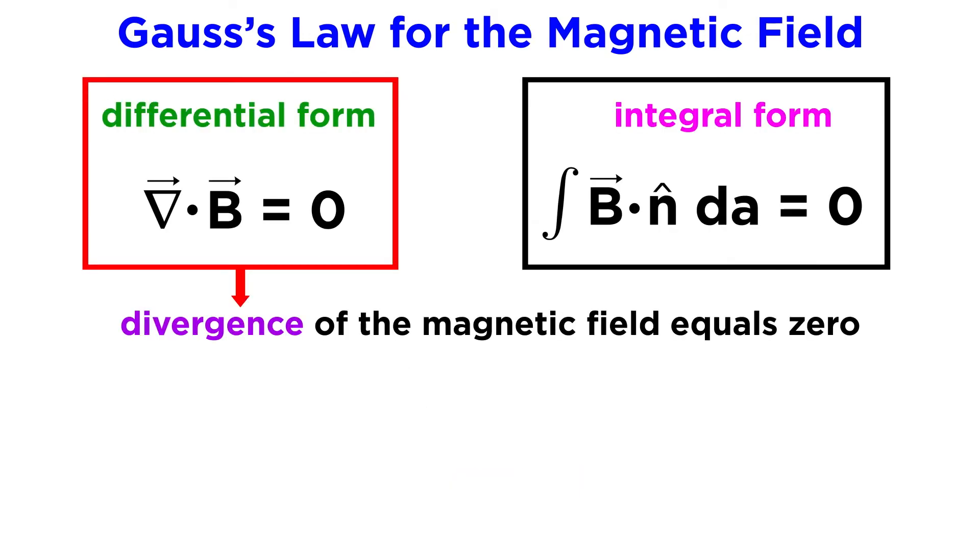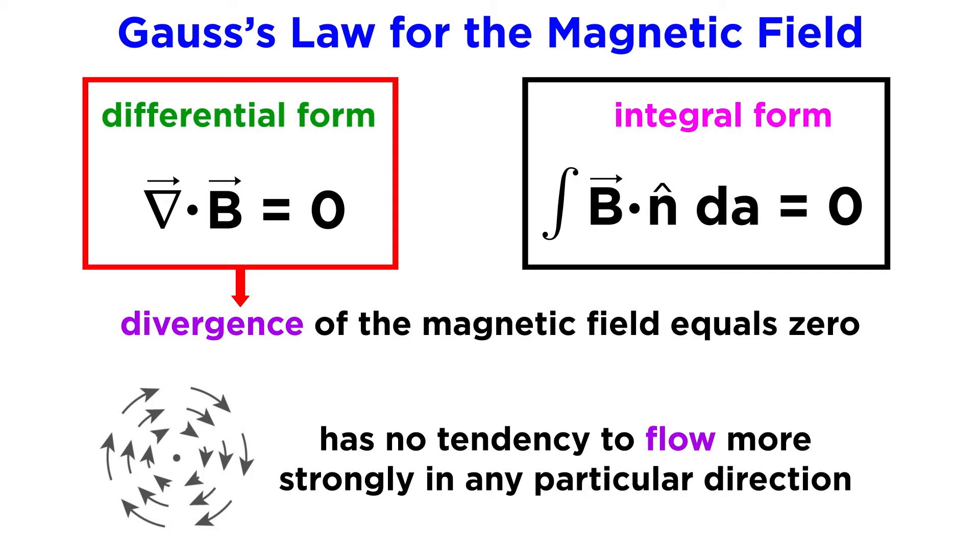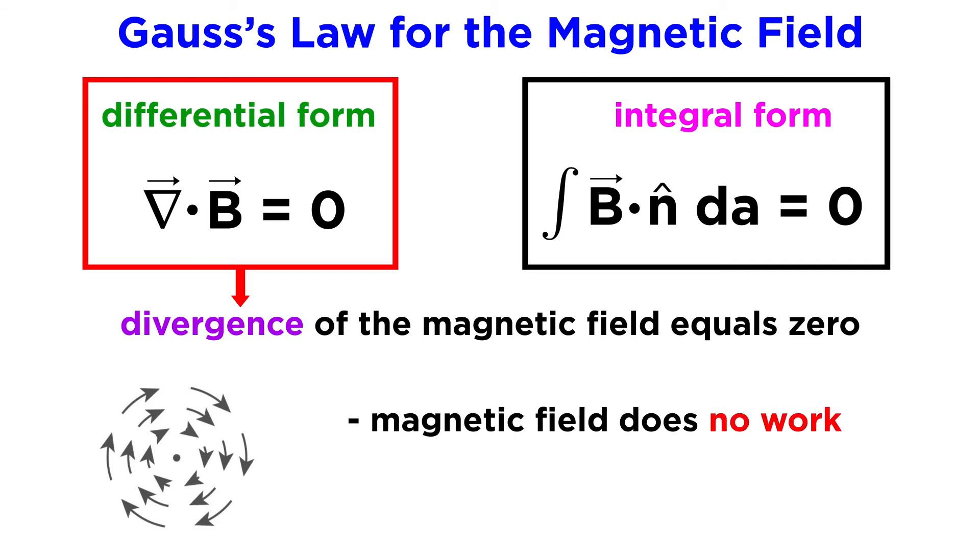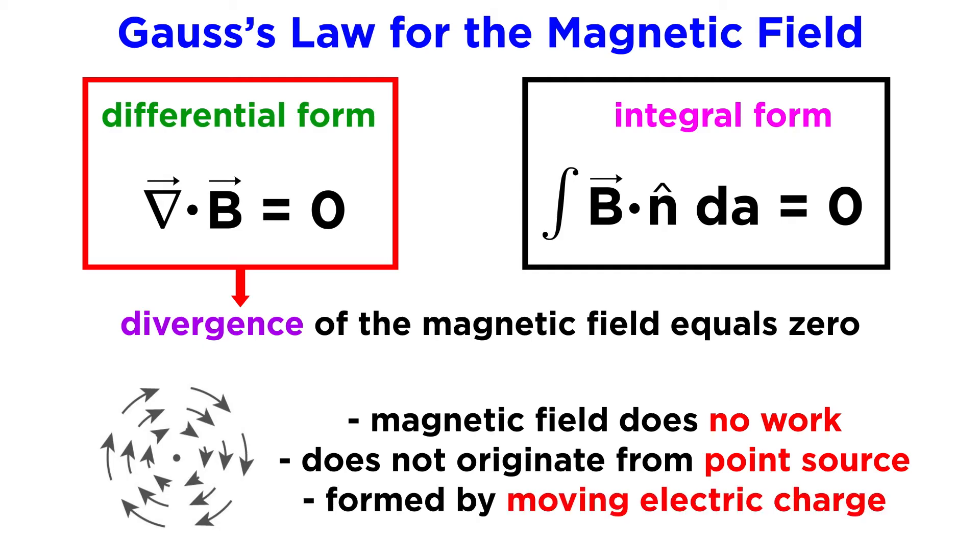As a quick reminder, looking again at the differential form, the divergence of a field is the tendency of that field to flow more strongly away from a point than towards it. A divergence of zero means a flat field. This is an important property and it reaffirms the idea that a magnetic field does no work. There is no magnetic charge density because the magnetic field does not originate from a point source, but rather from a moving electric charge, which is a vector.